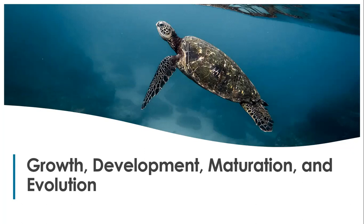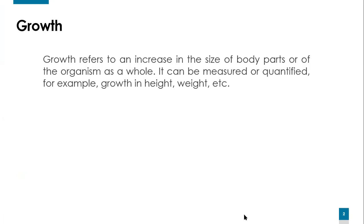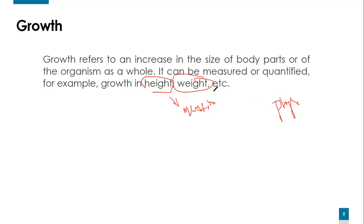Growth refers to an increase in the size of body parts or of the organism as a whole. In some way, growth refers to the physical component — what you can physically see. It can be measured or quantified. For example, growth in height can be measured in meters, centimeters, feet, or inches. Weight can be measured in kilograms. These changes can be physically seen on the body.